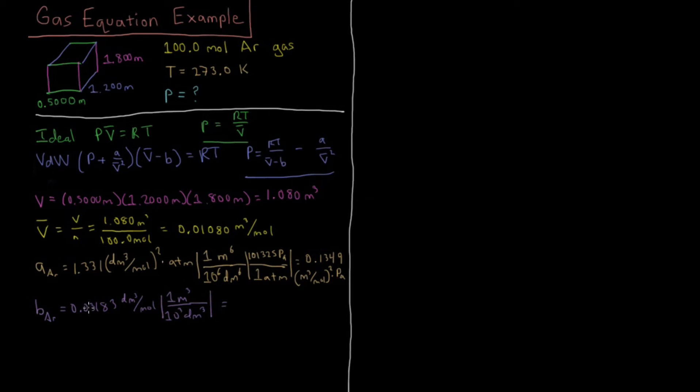That takes us from 3.183 × 10⁻² to 3.183 × 10⁻⁵ meters cubed per mole. You can imagine that would be the volume of a mole of argon atoms if they were completely packed together, or at least what it would be according to the Van der Waals equation of state.